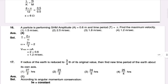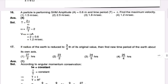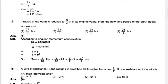The next question is: a particle is performing simple harmonic motion. The amplitude is equal to 0.6 mm, the time period is equal to 5 seconds, and the maximum velocity is equal to 1.2 meter per second.